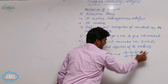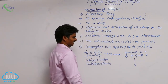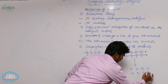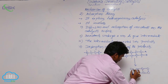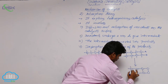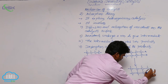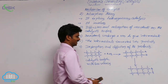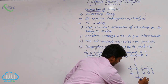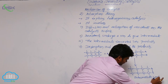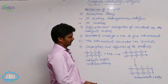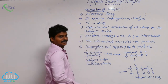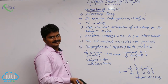Now these adsorbed reactants undergo reaction. An intermediate complex is formed between the reactants A and B on the catalyst surface. Now this intermediate complex forms products. Those formed products leave the surface by desorption.